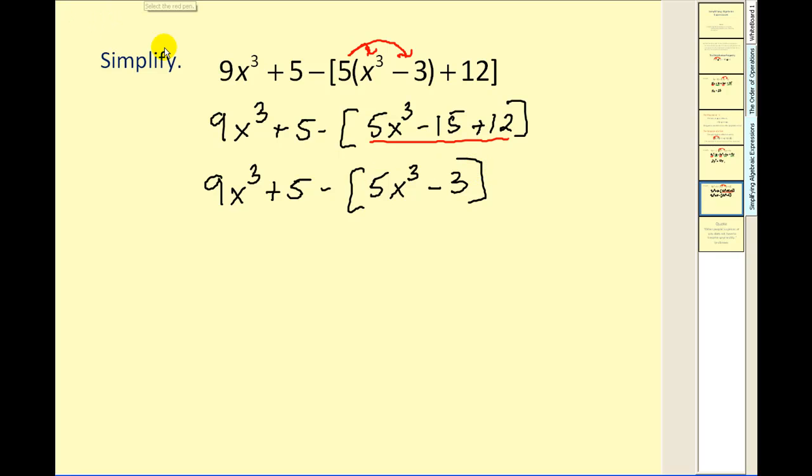Now we still need to clear these parentheses. And notice how we're subtracting this quantity. So we could change this to adding the opposite. Or, as I mentioned before, we can think of distributing a negative 1. Whichever method you've learned before and whichever method you're comfortable with. So we'd have minus 5x cubed and then plus 3.